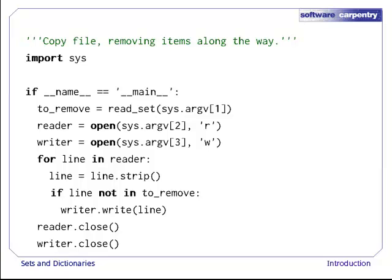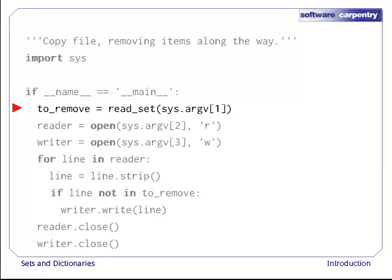This is the main body of our program. We start by reading in the set of birds we're supposed to be subtracting from our observations. That's going to take a few lines of code, so for now, we'll pretend we can do this by calling a function readSet, which we'll come back and write in a minute or two.